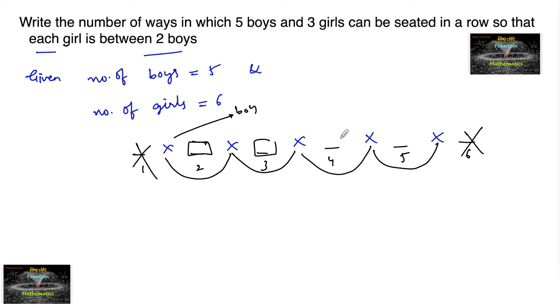So these 3 girls can be seated between 2 boys in such a way that among the 4 gaps, the total number of positions is 4. So we need to take 3 at a time, that is 4P3. The number of permutations of 4 different things taken 3 at a time is 4P3.